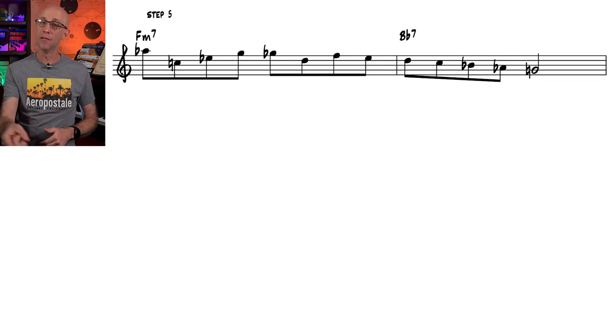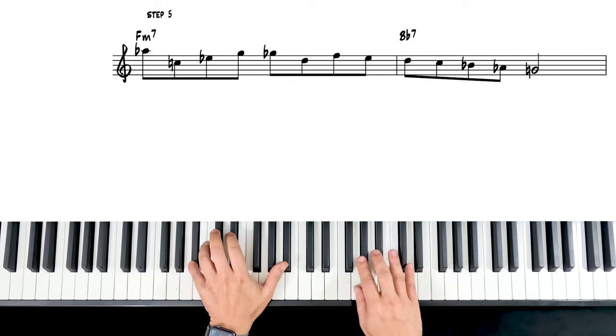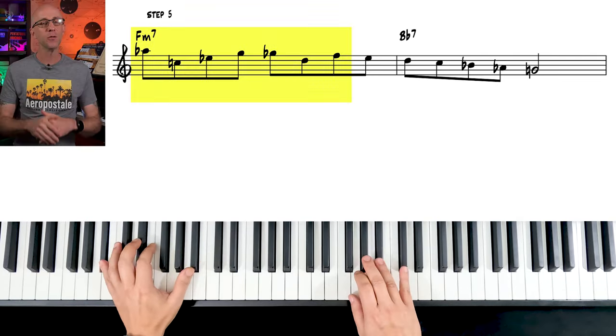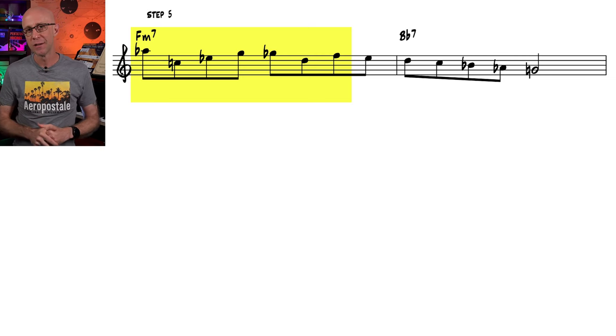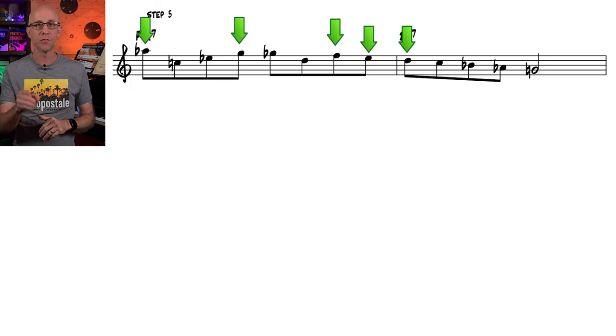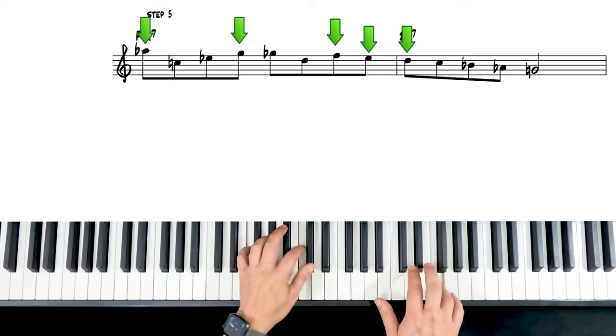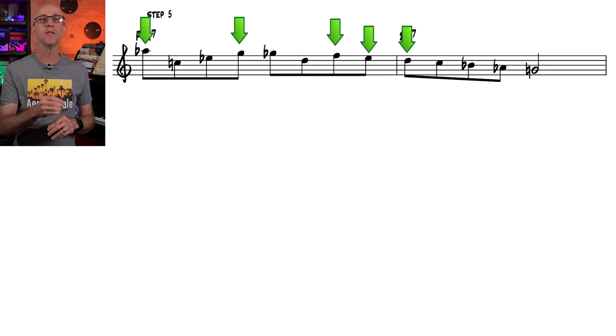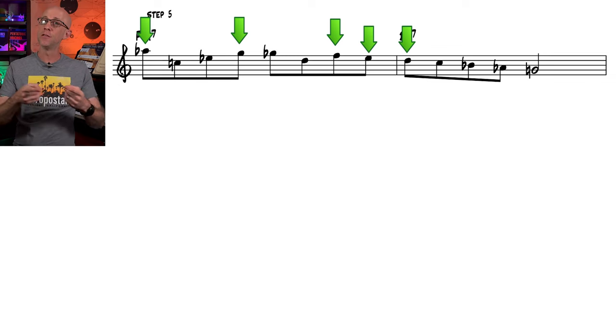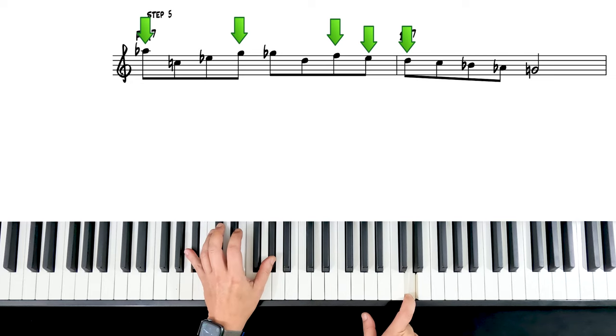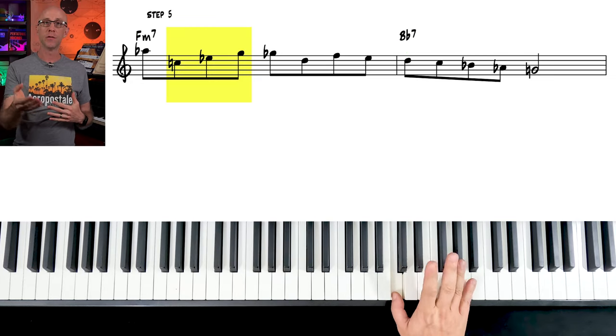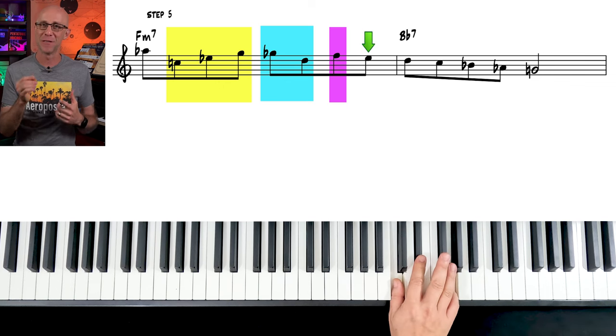In step five, we're playing this. This is a great enclosure that can be seen from a bunch of different perspectives. You can see it as a line that descends from Ab to D like this. And if we play this line on an F minor 7 to Bb7, it takes us from the third of the F minor 7 to the third of the Bb7.